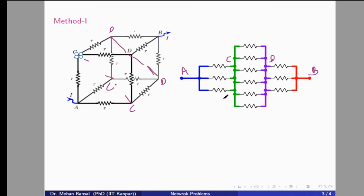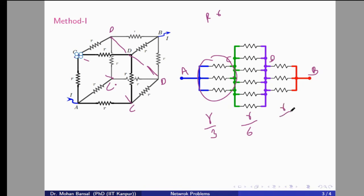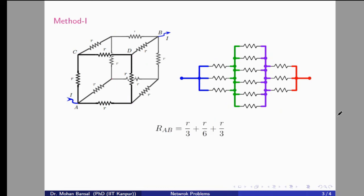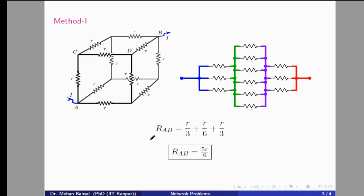Since all resistors have the same value R, for parallel resistors the equivalent resistance divides by the number of resistors. So between A and C we get R/3, between C and D we get R/6, and between D and B we get R/3. The total equivalent resistance is R/3 + R/6 + R/3, which gives 5R/6.